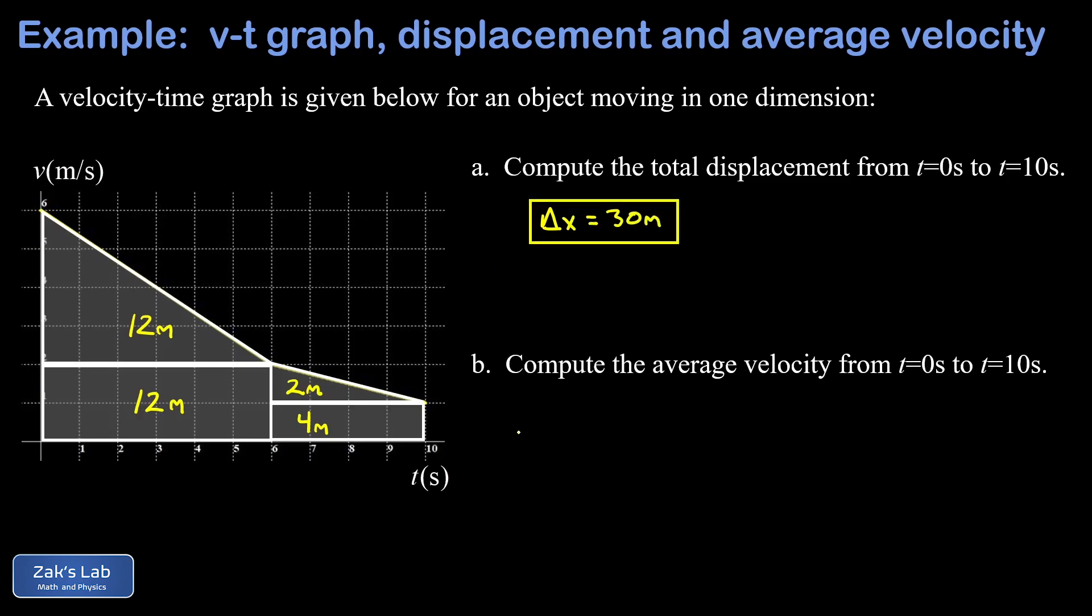Next we're asked to compute the average velocity for this object from t equals zero to 10 seconds. It's so important that you don't misinterpret that word average—this does not mean an arithmetic mean. Average velocity means the total displacement divided by how long it took.